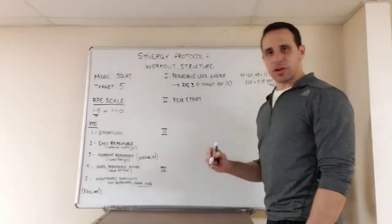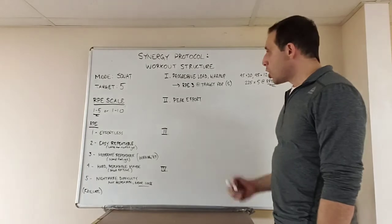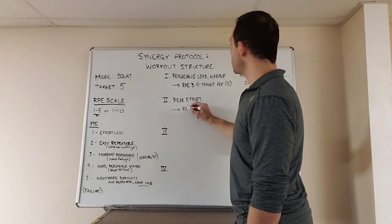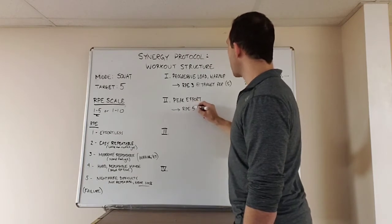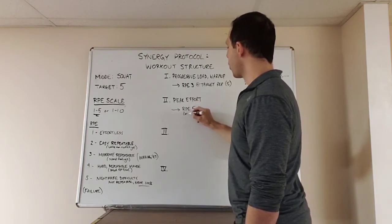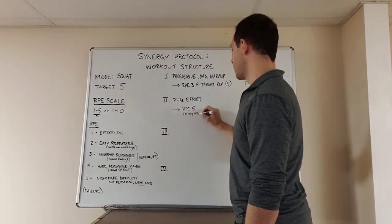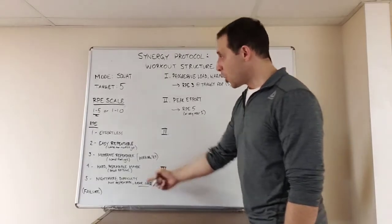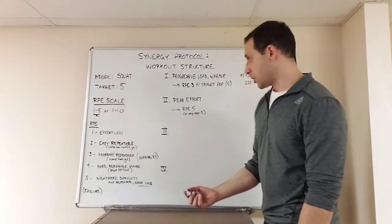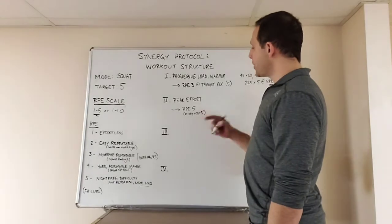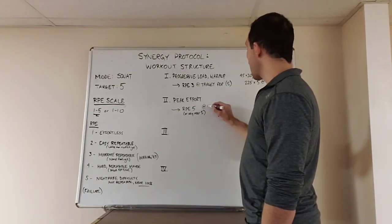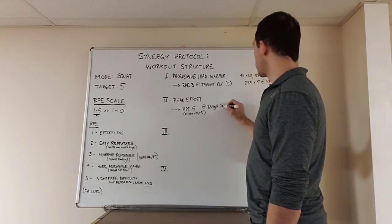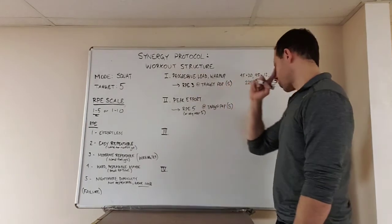Peak effort is exactly what it sounds like. Working as hard as possible. The goal of the peak effort phase is to achieve an RPE of 5, or very near 5. So a hard 4, or if you're using a 1 to 10 scale, a 9 or 10. An RPE, a high RPE at the target rep range, which is 5 in this case, for this workout.